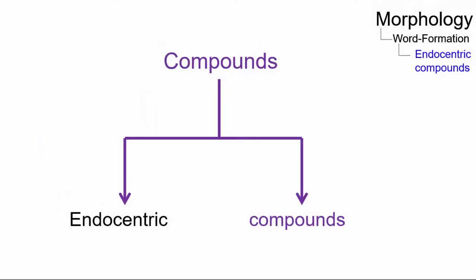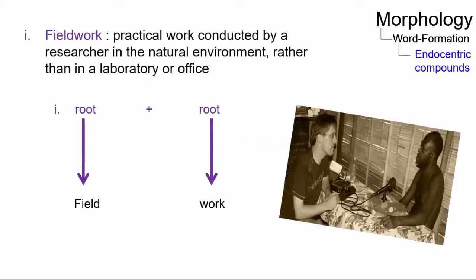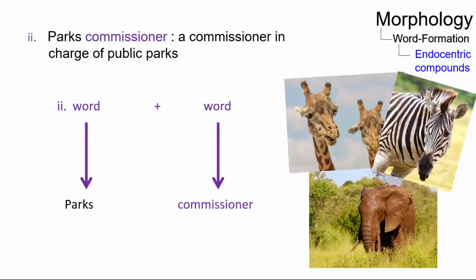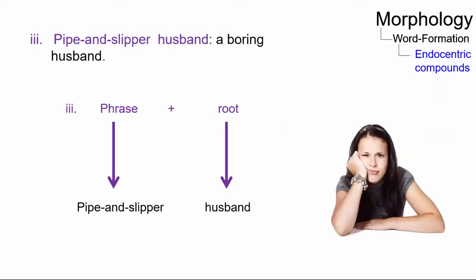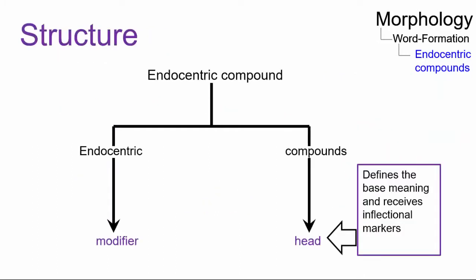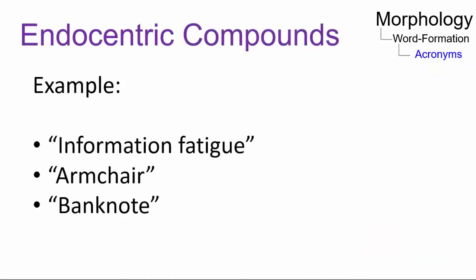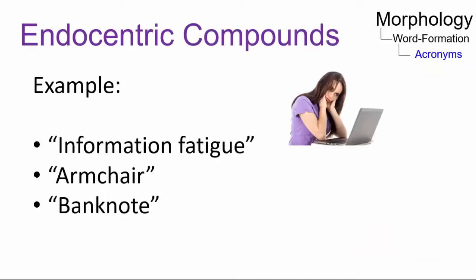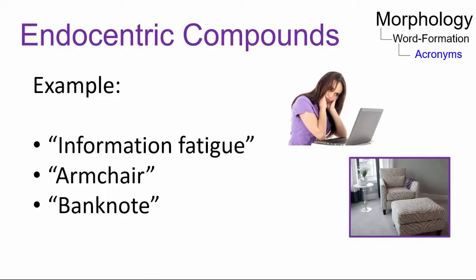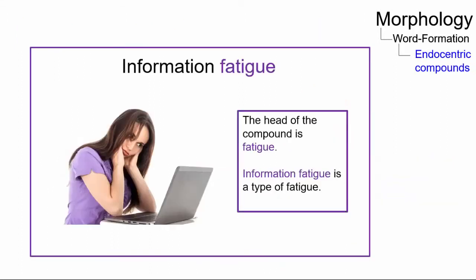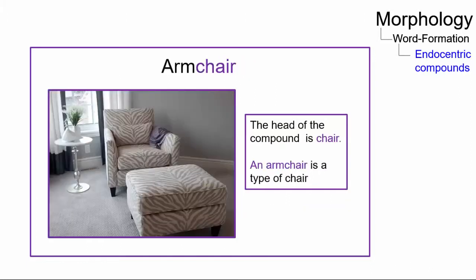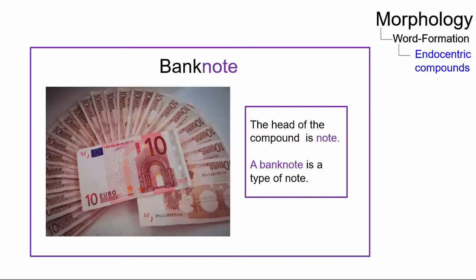An endocentric compound refers to the combination of two or more roots, words, or phrases in which the grammatical head of the compound expresses its main meaning. Examples include information fatigue, armchair, and banknote. Information fatigue is a type of fatigue, armchair is a type of chair, and banknote is a type of note.